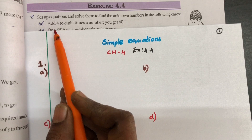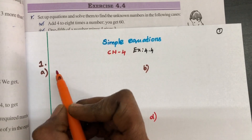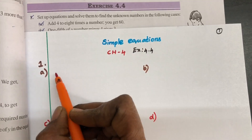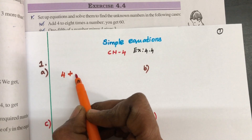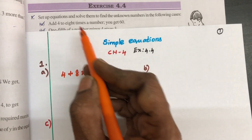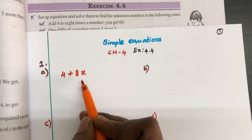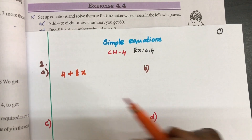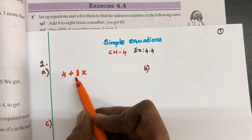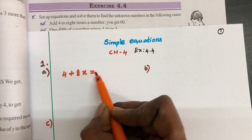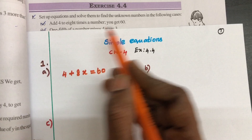First question A: Add 4 to 8 times a number, you get 60. We don't know the number — that is the unknown, which we take as x. You can take it as A, B, C, D, whatever you want. So 4 plus 8x is equal to 60. This is our equation, formed using the statement.